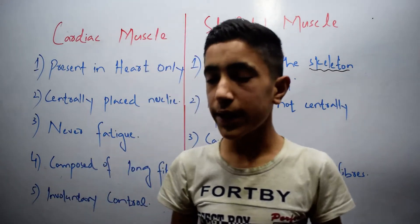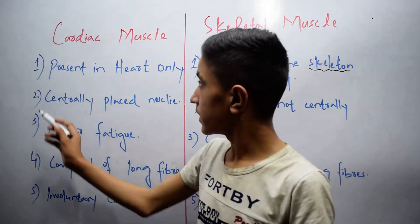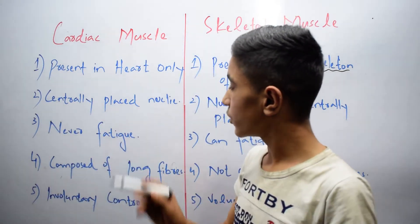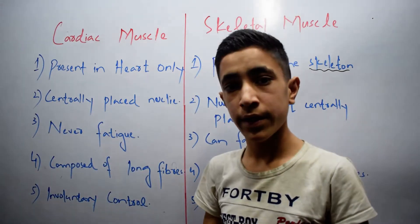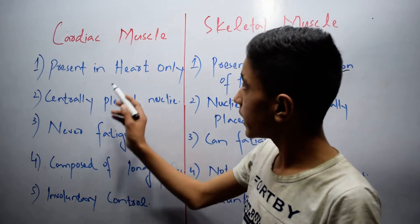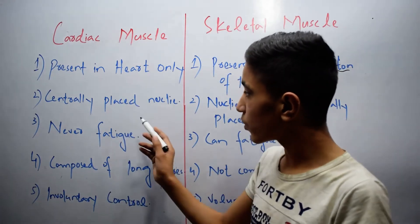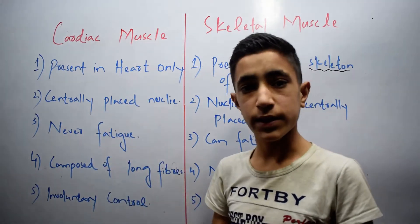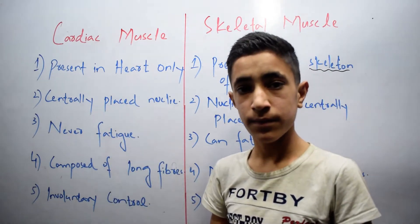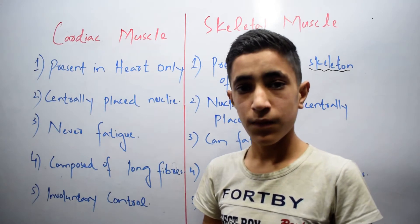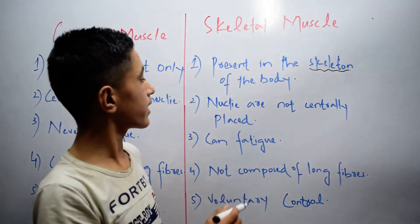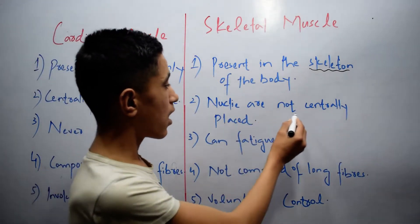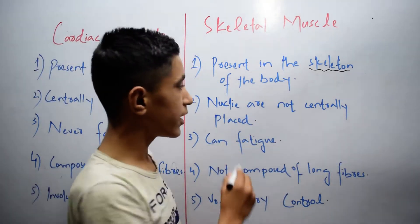The second difference is that cardiac muscle has centrally placed nuclei, meaning the nucleus is located at the center, while in skeletal muscles the nuclei are not centrally placed.